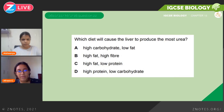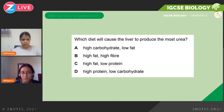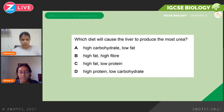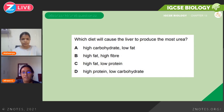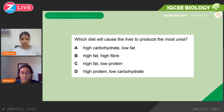This is May/June 2016: 'Which diet will cause the liver to produce the most urea?' Urea comes from the process where nitrogen-containing parts of amino acids are removed. Amino acids means proteins, so it has to be a high-protein diet. It's not A, B, or C — it is D, high protein. Low carbohydrate doesn't really factor into this, but no other option has high protein, so D is the most viable option and that is the correct answer.